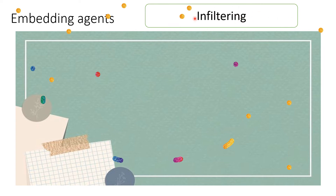The paraffin wax goes inside the tissue — this is called the infiltration process. The infiltration process gives internal strength to the tissue so that our sectioning process is very clear.